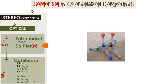Square planar structures do not exhibit optical isomerism because we cannot create structures which are not superimposable. Wherever we create two structures that look like mirror images, we are able to superimpose them, and therefore these are not optical isomers.